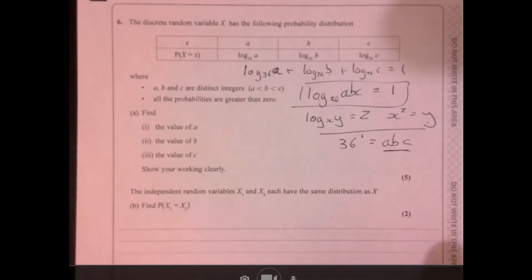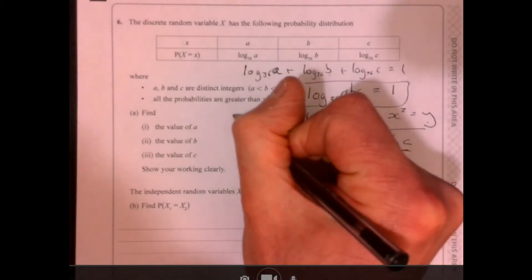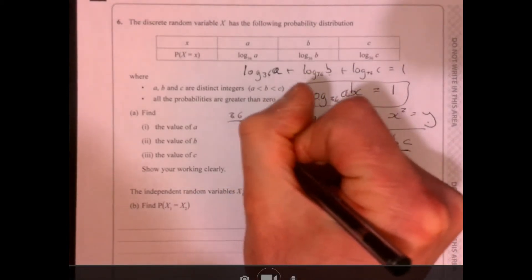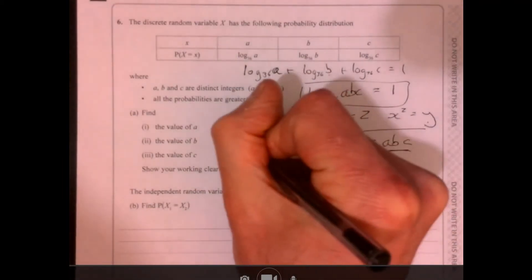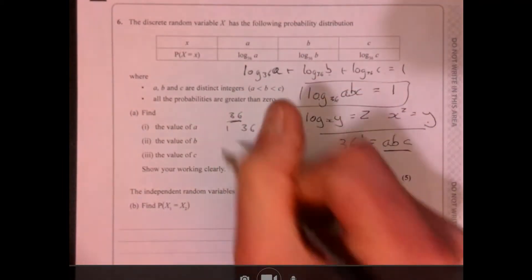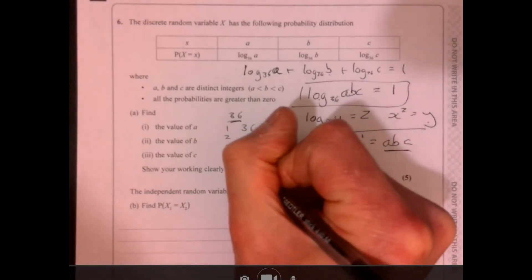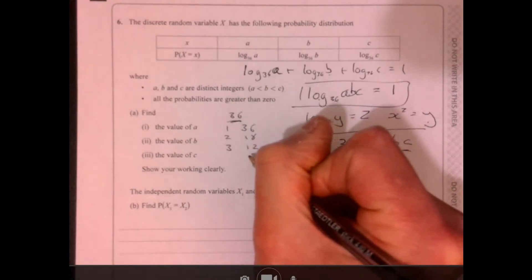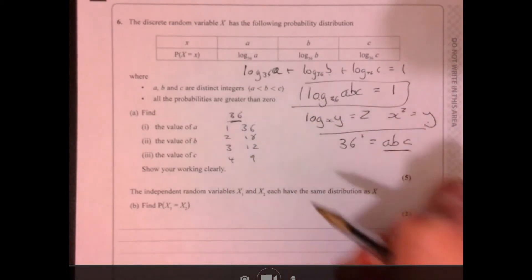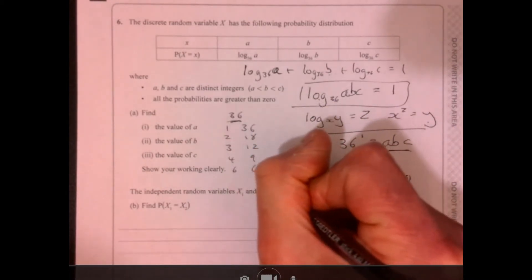abc multiplied together to give us 36. Best thing to do at this stage, as I just thought, well, okay, so what things multiply together to give me 36? So, looking at 1 in 36, 2 in 18, you could just consider product of prime factors, 3 in 12,